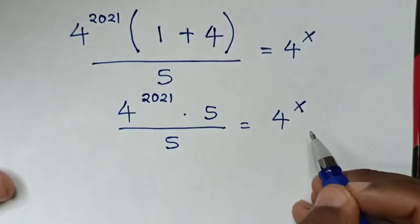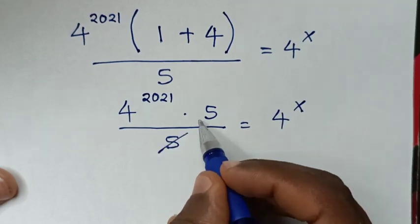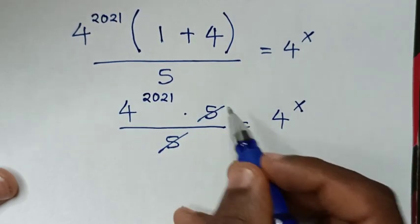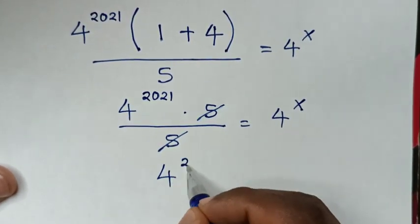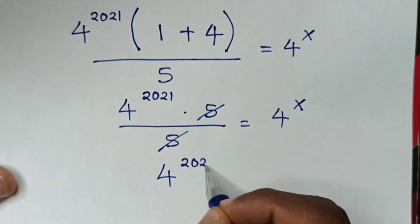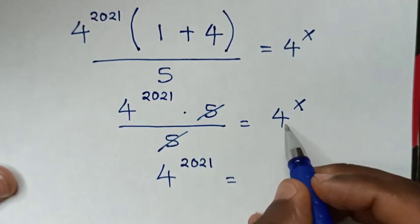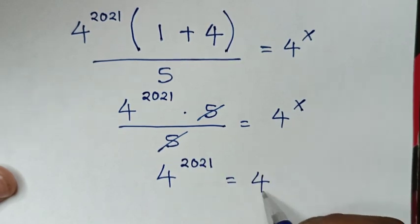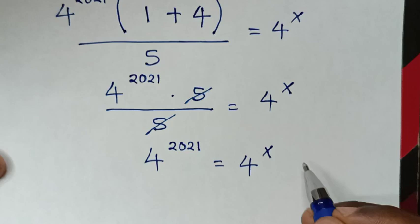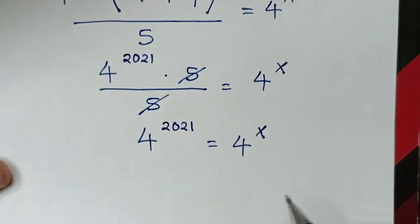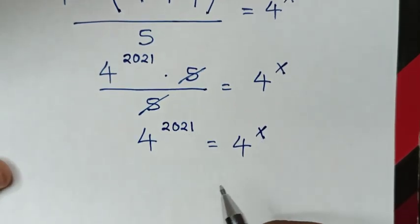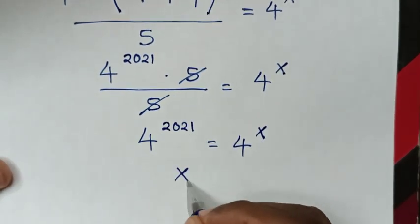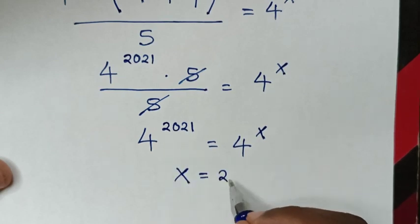In the next step, to simplify, we cancel the 5. So it will be 4 power of 20,21 is equal to 4 power of x. Now we have the same base of 4, so we compare the powers. Therefore x is equal to 20,21.